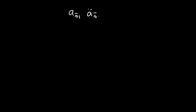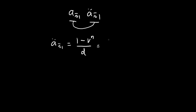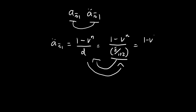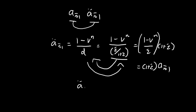The third thing I'd like to do is find a relationship between a_n and ä_n, which is useful when converting from one symbol to the other — this comes up frequently in FM exams. Recall the formula for annuity due is (1 minus vⁿ) divided by d. Going back one step in our geometric series proof, we can take the (1 plus i) in the denominator and flip it upward, and you'll see this is just the present value of an annuity immediate. So ä_n equals (1 plus i) times a_n. This formula can come in handy in your exams and is worth remembering.